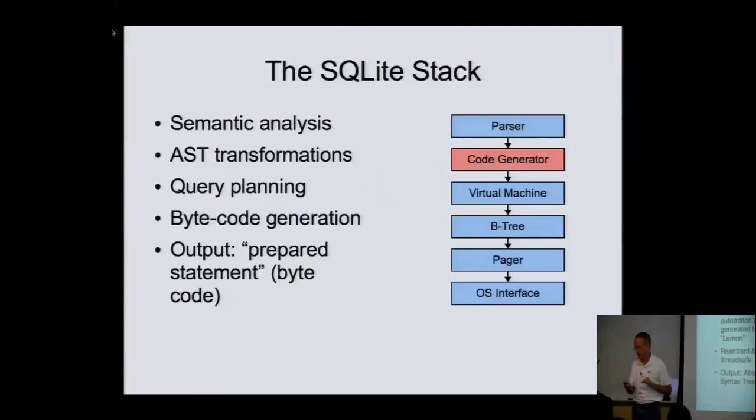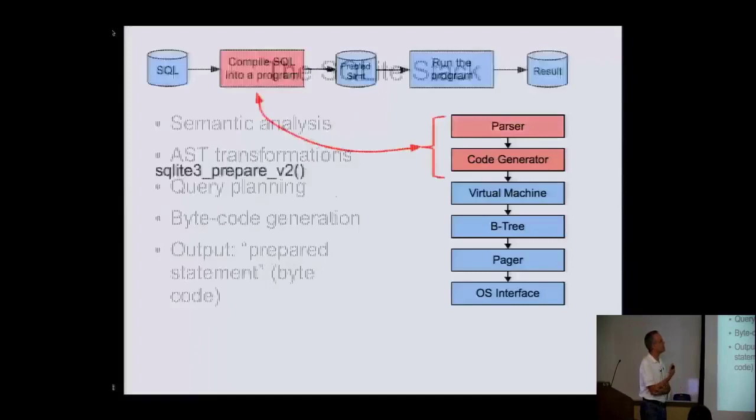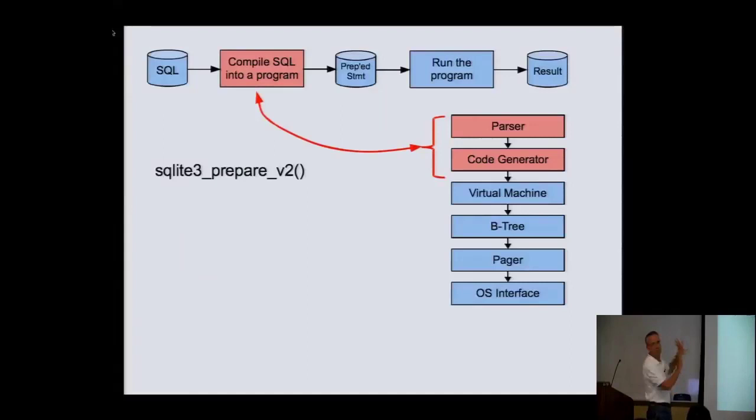Moving on down further, we have the code generator, which does semantic analysis of the parsed code, transforms the parse tree to make things more efficient, does query planning, and then generates bytecode. The output of this is the prepared statement. Think of these two steps — parser and code generator — as GCC: they take raw program text and turn it into something the machine can understand. The rest of the stack implements the machine.